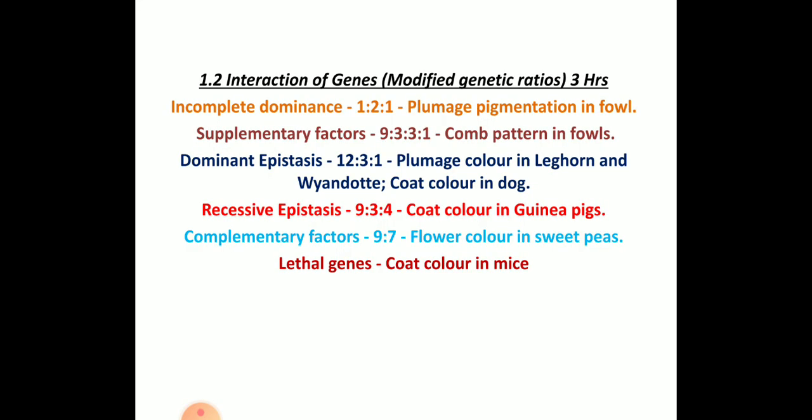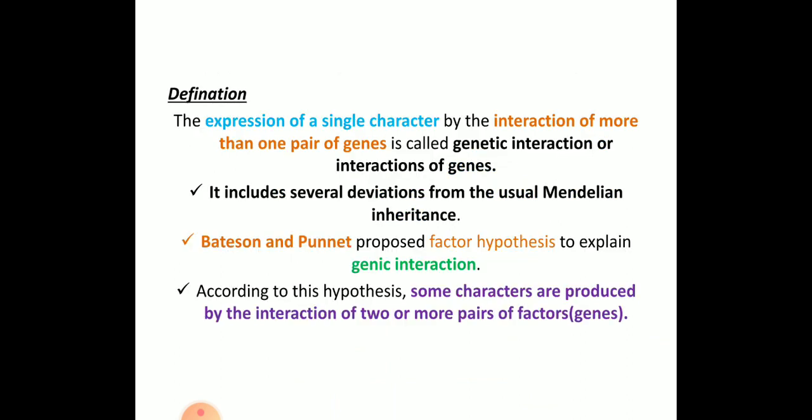In interaction of genes it consists of incomplete dominance, supplementary factor, dominant epistasis, recessive epistasis, complementary factors and lethal genes. These are the examples we need to study for the syllabus. The definition goes like this: the expression of a single character by the interaction of more than one pair of genes is called genetic interaction or interaction of genes.